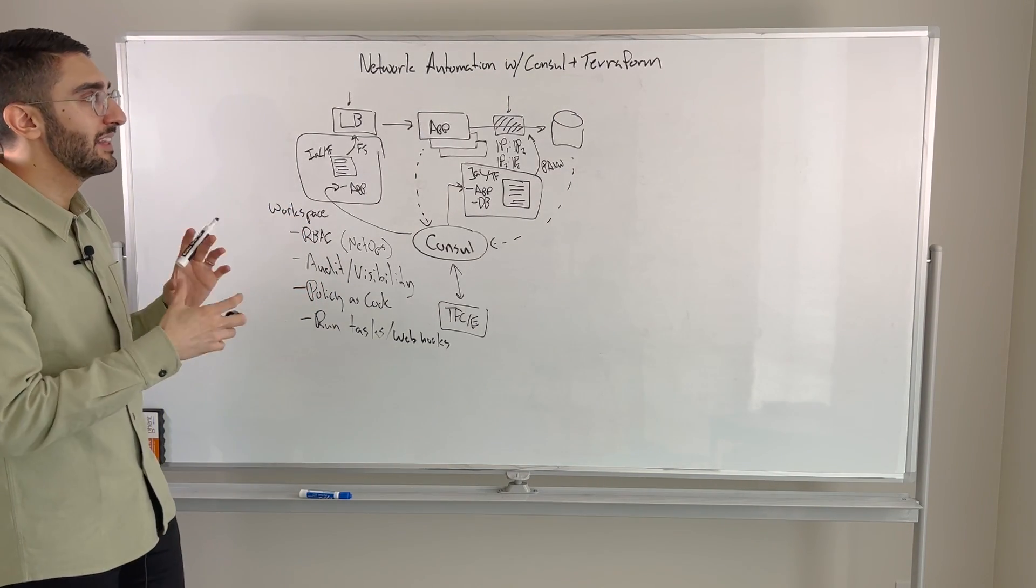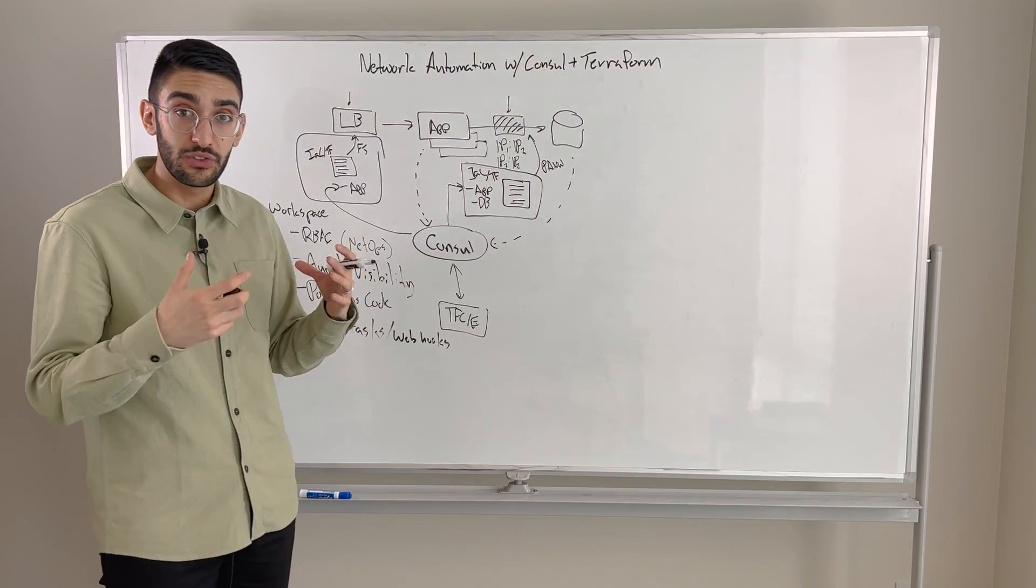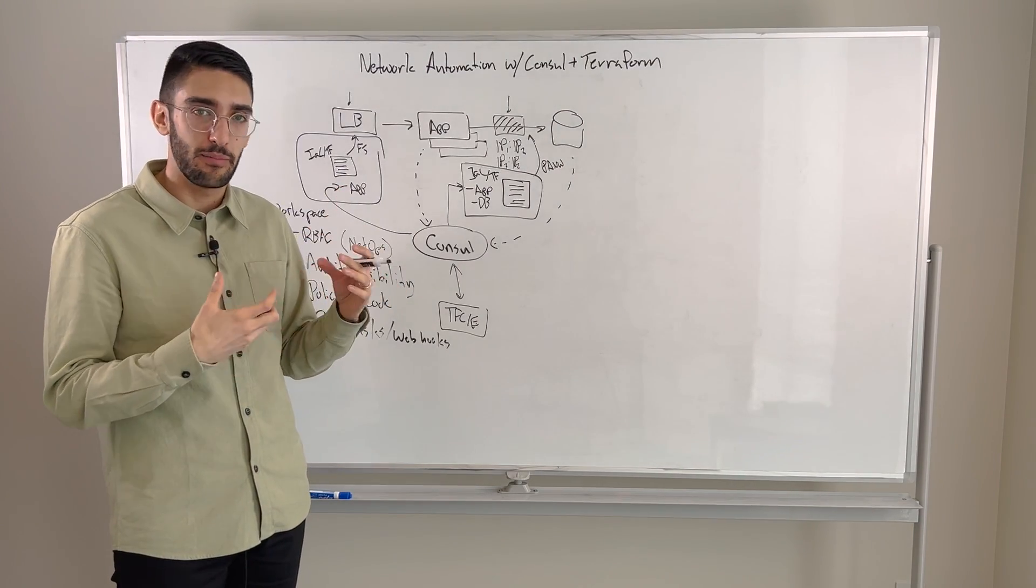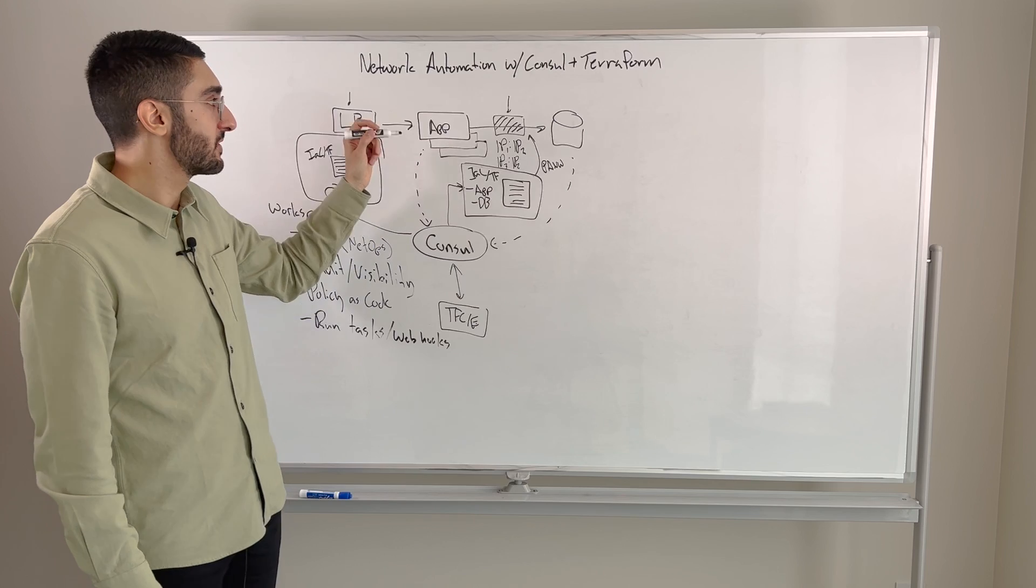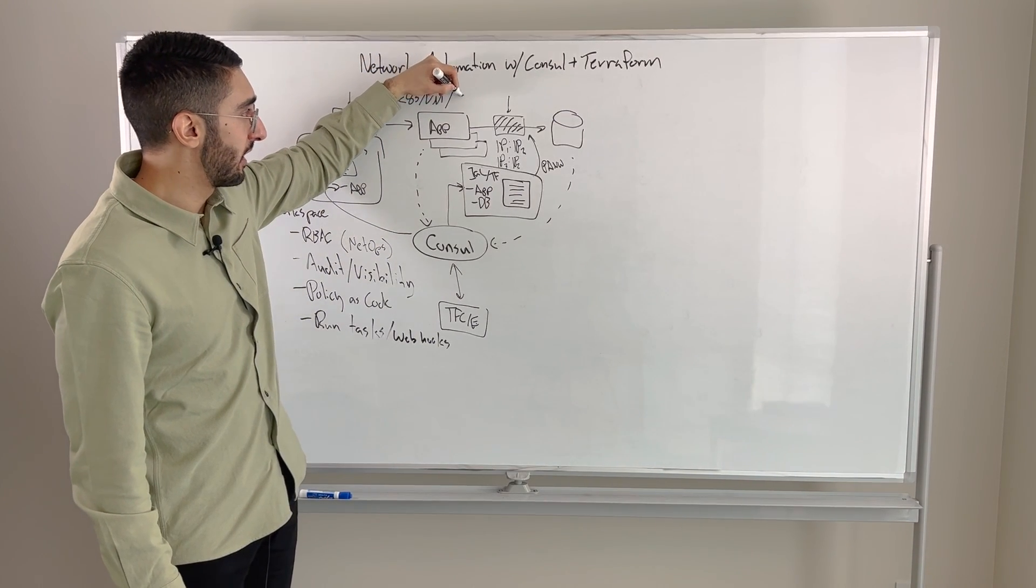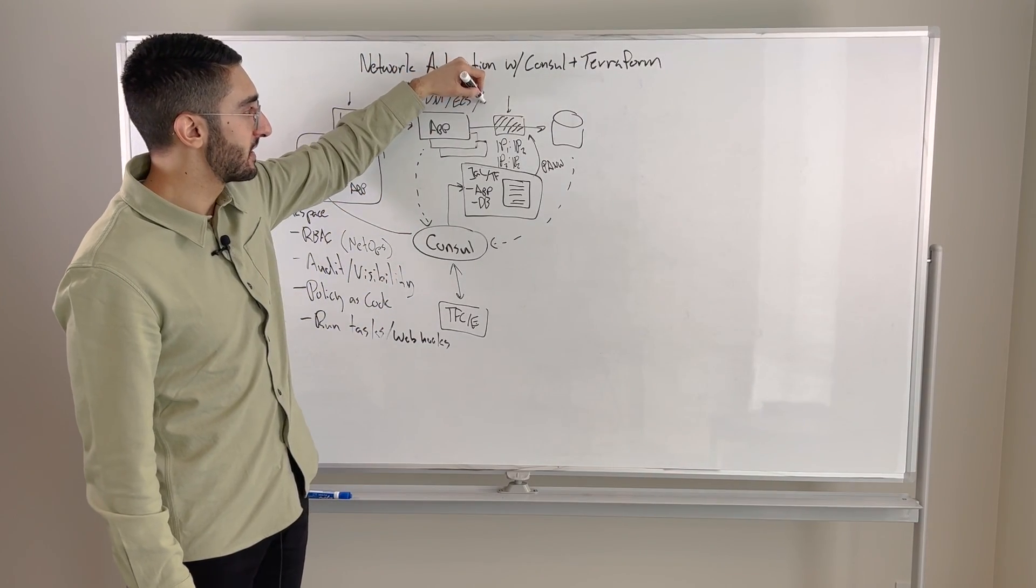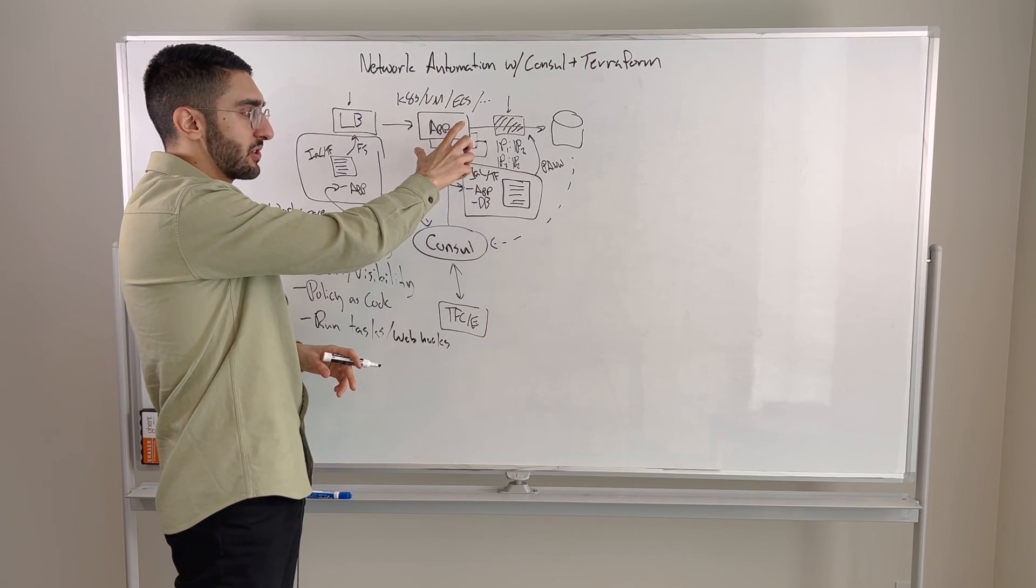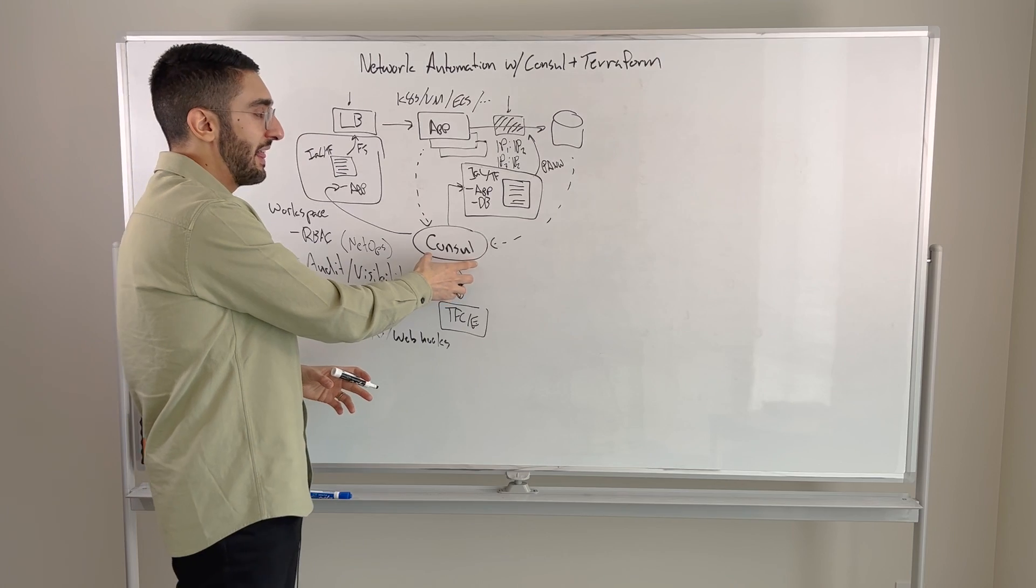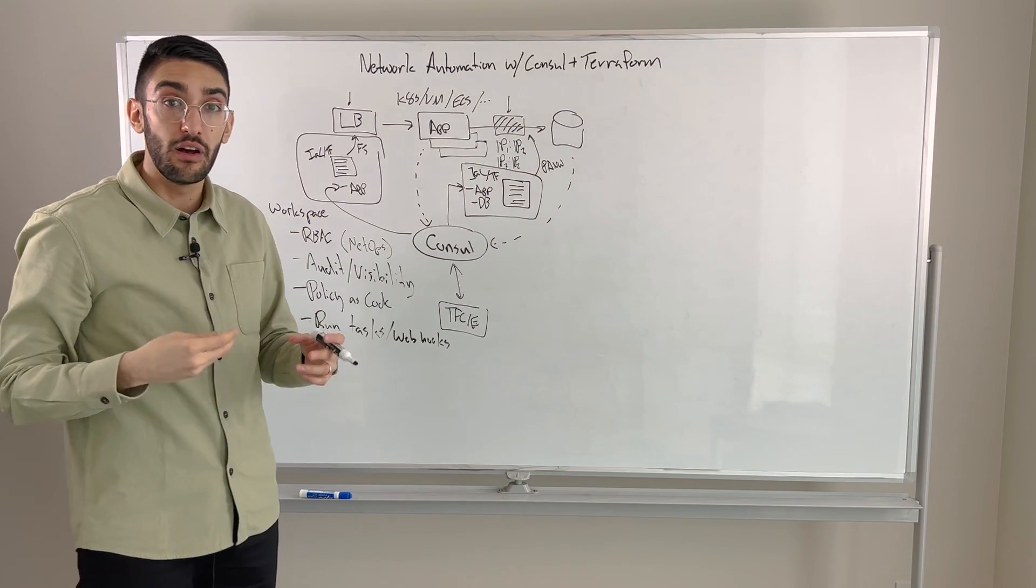So this is how we start marrying these two together. Console at the base provides that catalog, that real-time view of which IPs belong to which services and how are those changing as applications come and go. And these applications might span many different environments. This could be a Kubernetes-based app. This could be a VM-based app. Maybe it's running on a native ECS Fargate type of environment. It might be bare metal, et cetera. So we kind of don't care where the applications are coming from. It's about creating that single global consistent catalog of all of it. That then enables us to connect it into things like Terraform to do the automation of the network layer.